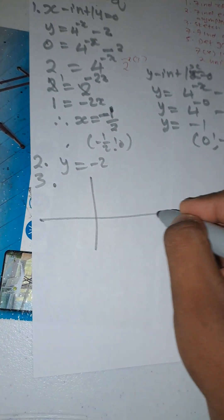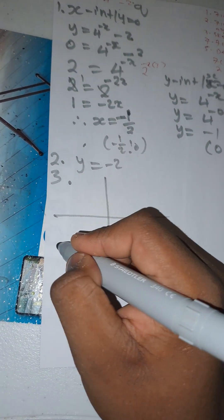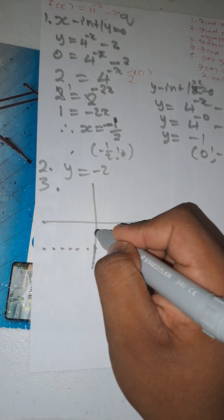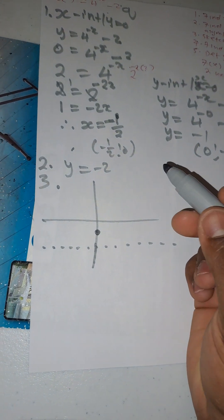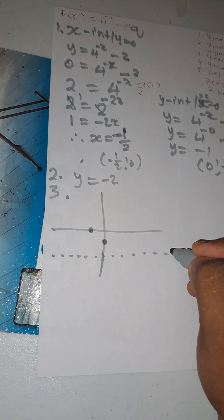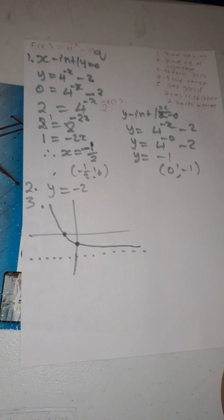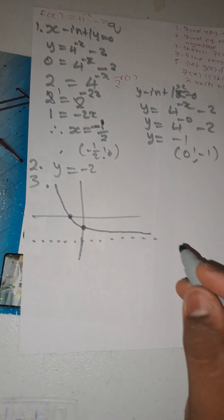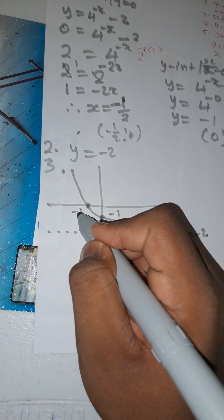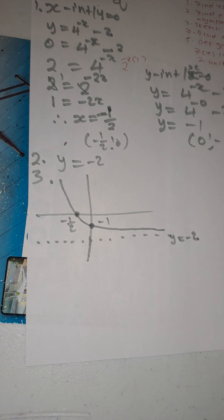Number two: find the equation of the asymptote. It's already in the equation — y = -2, since q = -2. Number three: sketch the graph. First draw the asymptote at y = -2 as a dotted line. Plot the y-intercept at (0, -1) and the x-intercept at (-1/2, 0), then draw the curve approaching the asymptote.